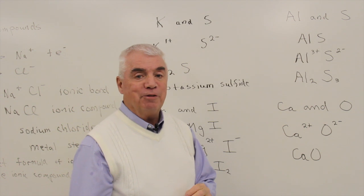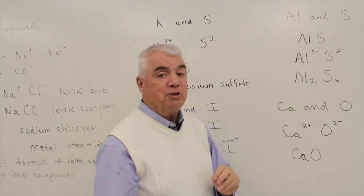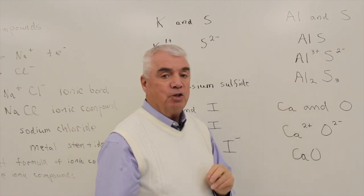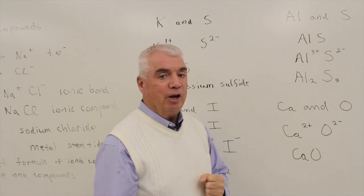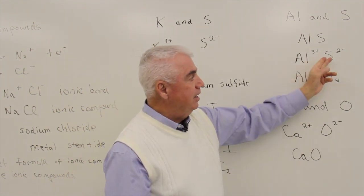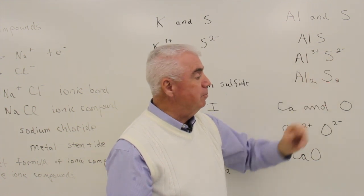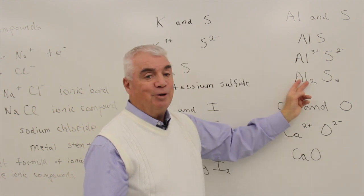And how many electrons have been transferred? Well, aluminum likes to form a 3+. We've got two of them. So aluminum, the two aluminums have given up six electrons. Each sulfur likes to take on two. With three of them, we're taking on those six electrons. So it's worked again.